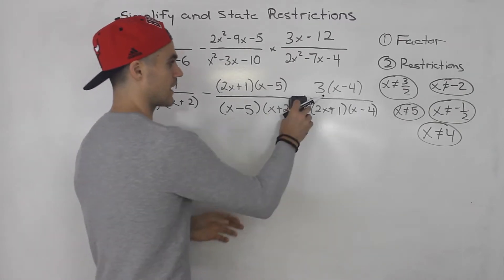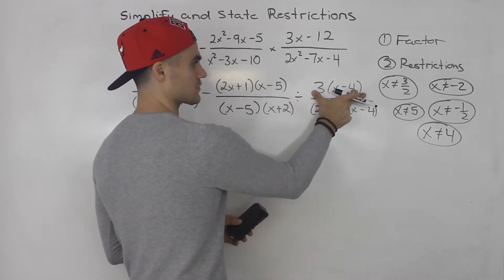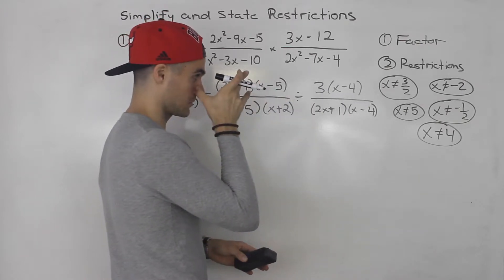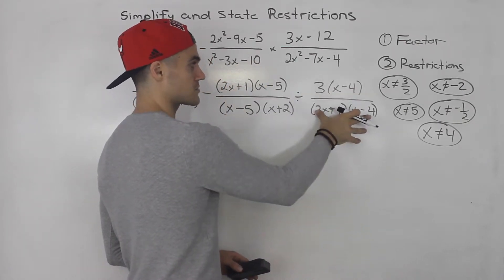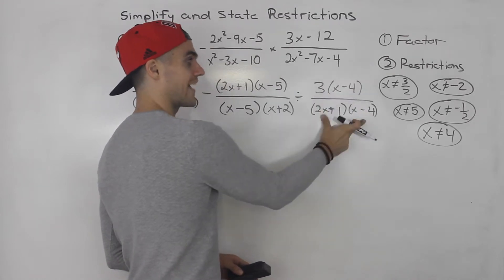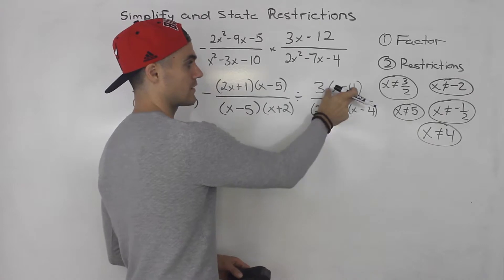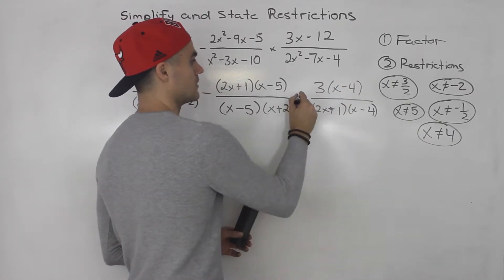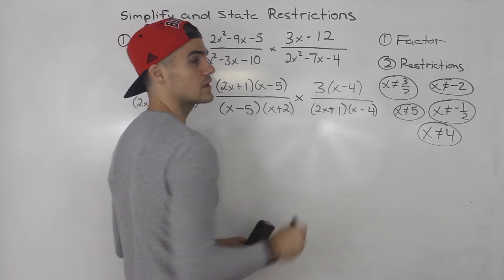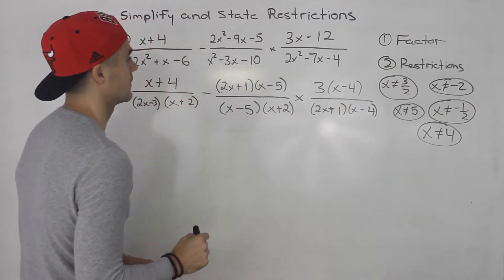If this was dividing, we would have to get the restrictions from this numerator here. Because if you remember, when we were talking about dividing rational expressions, if you're dividing by a rational expression, the numerator and denominator cannot be zero. So we'd have to look at the factors in the numerator as well. But since we're multiplying, we only care about the denominator. So I thought I would make a mention of that.